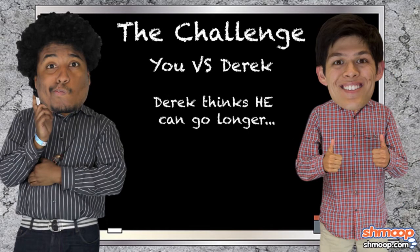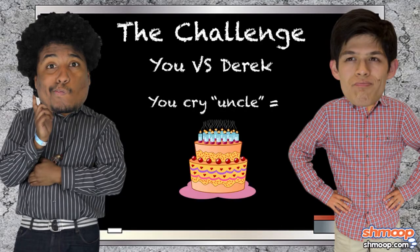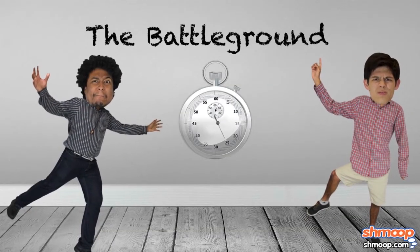So you make it interesting. Derek tells you that for every two seconds you stand on one foot longer than him, he'll give you a Starburst. But if you cry uncle before Derek, you have to bake him a cake. It seems a little lopsided, sort of like someone standing on one foot, but who are we to meddle? And who bakes cakes anymore?